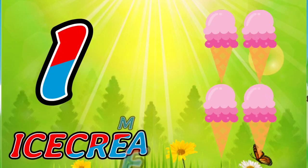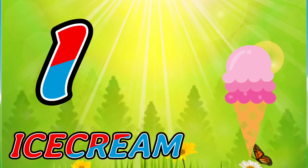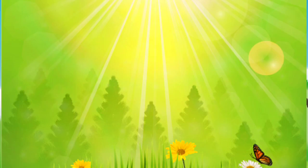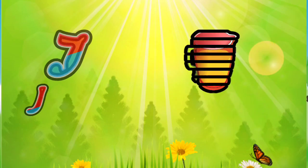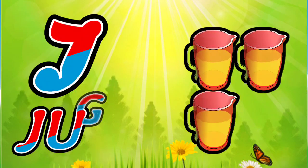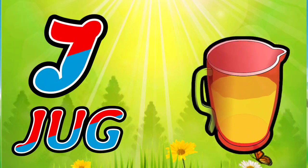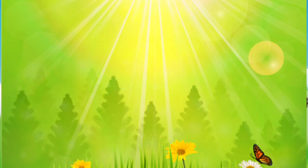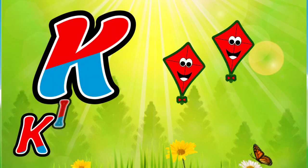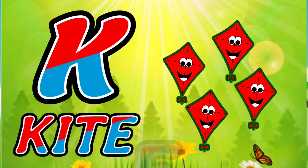C, R, E, A, M. Ice Cream. J for Jug. J, U, G. Jug. K for Kite. K, I, T, E. Kite.